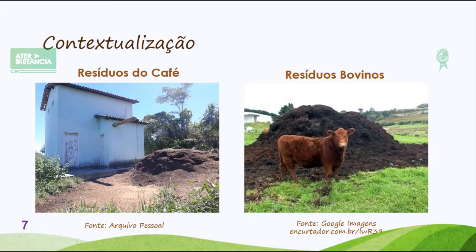Se eu tenho esse material na minha propriedade, materiais que podem me dar esse retorno, por que não utilizá-los? O resíduo da casca de café, quando mal manejado, torna-se um impacto ambiental. Cerca de 50% do volume do material do café produzido é palha. Assim como nos resíduos bovinos: um gado pode chegar a produzir mais de 30 quilos diários de esterco. A incorreta destinação desses resíduos vai estar gerando impactos ao solo, à água e podendo ser causadora de doenças para os seres humanos.